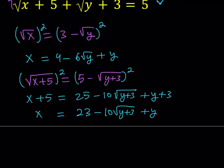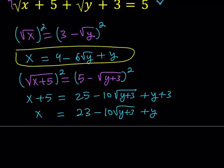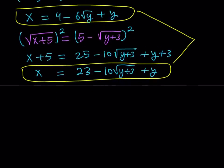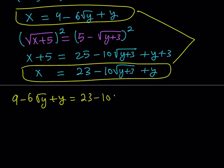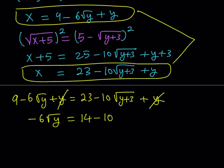So on one hand I have this equation, and in the second equation I have x by itself again. Since they're both equal to x, I can set them equal to each other. I'll set 9 minus 6 root y plus y equal to 23 minus 10 times the square root of y plus 3, plus y. The y's are going to cancel out, and we end up with only the radicals. I want to isolate one of the radicals — leave the negative 6 root y here, and subtract 9 from both sides. That gives me 14 minus 10 times the square root of y plus 3.